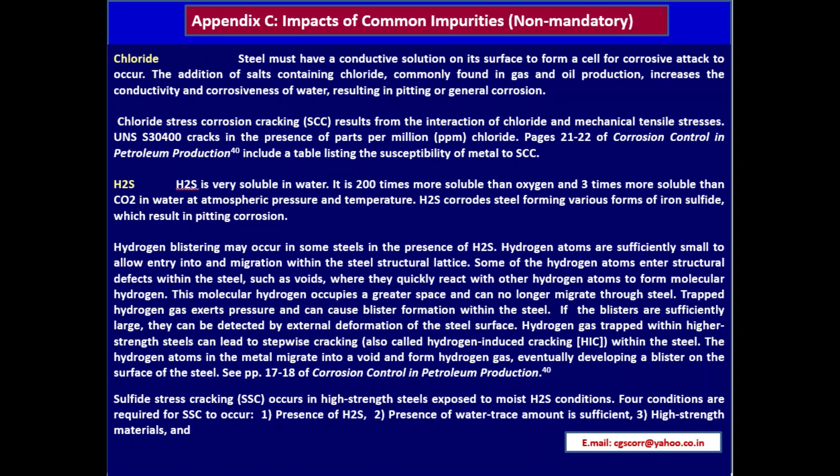Chloride: steel must have a conductive solution on its surface to form a corrosion cell. The addition of salts containing chloride (commonly found in gas or oil production) increases the conductivity and corrosiveness of water, resulting in pitting or crevice corrosion. Chloride stress corrosion cracking (SCC) results from the interaction of chloride and mechanical or residual tensile stresses. UNS S30400 (304 stainless steel) cracks in the presence of ppm levels of chloride. Refer to the table on pages 21–22 of Corrosion Control in Petroleum Production for susceptibility of metals to SCC.